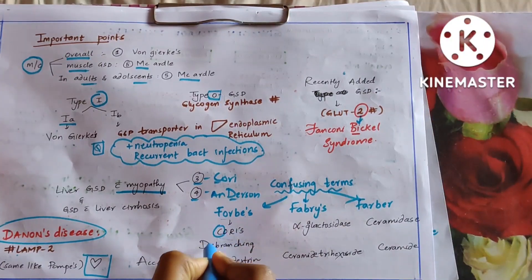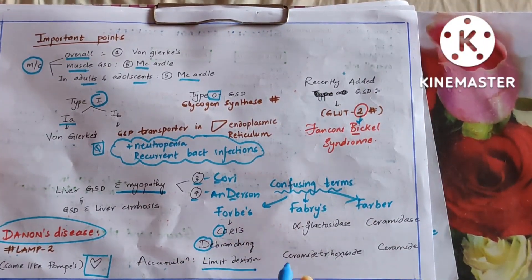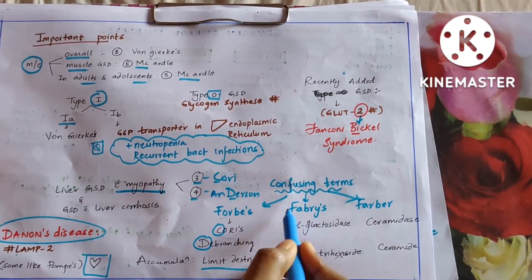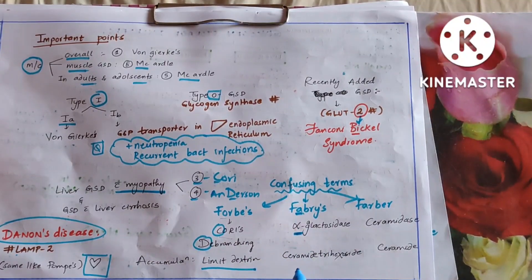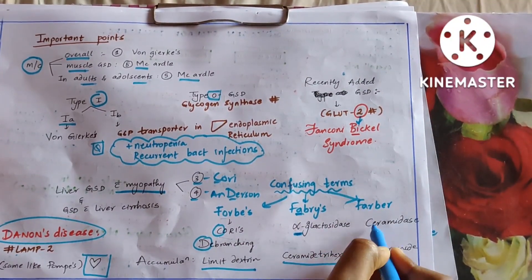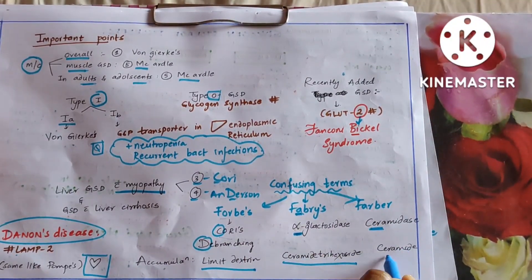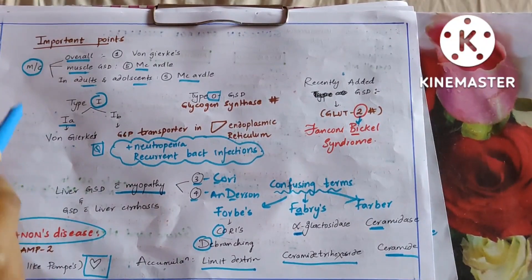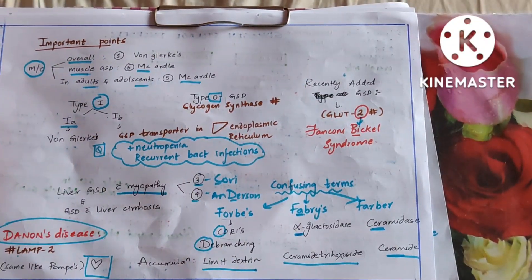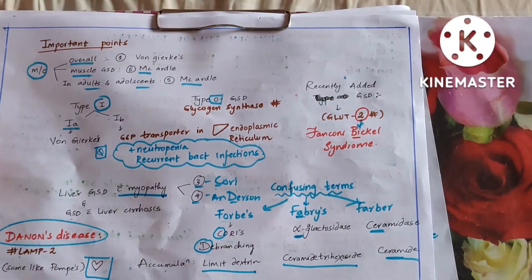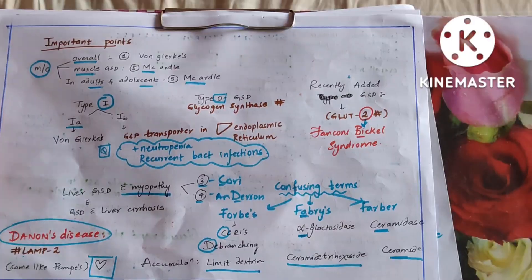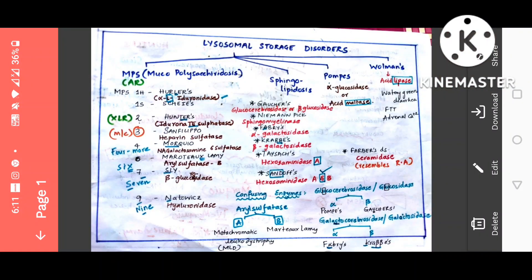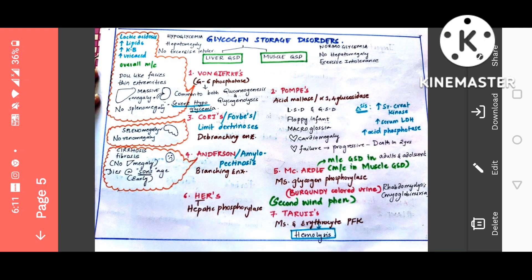Fabry's is 1a alpha-galactosidase — ceramide trihexoside accumulation. Farber's is ceramidase — ceramide accumulation. Fabry's and Farber's were learned in sphingolipidosis under lysosomal storage disorders, whereas Forbes is a glycogen storage disorder.